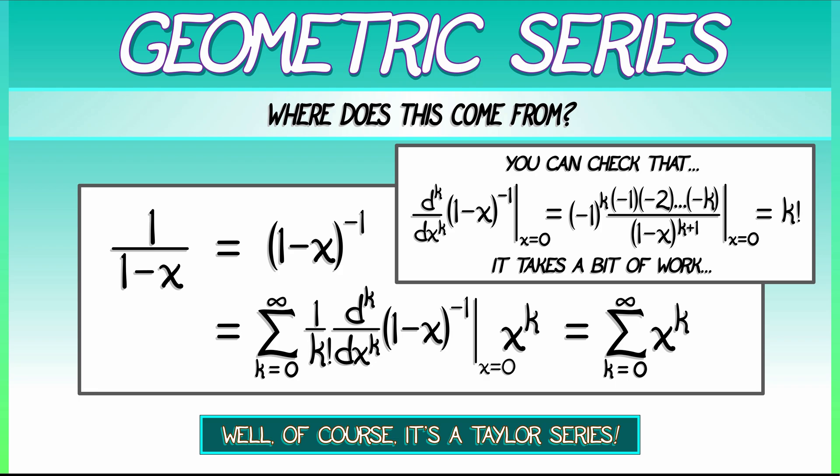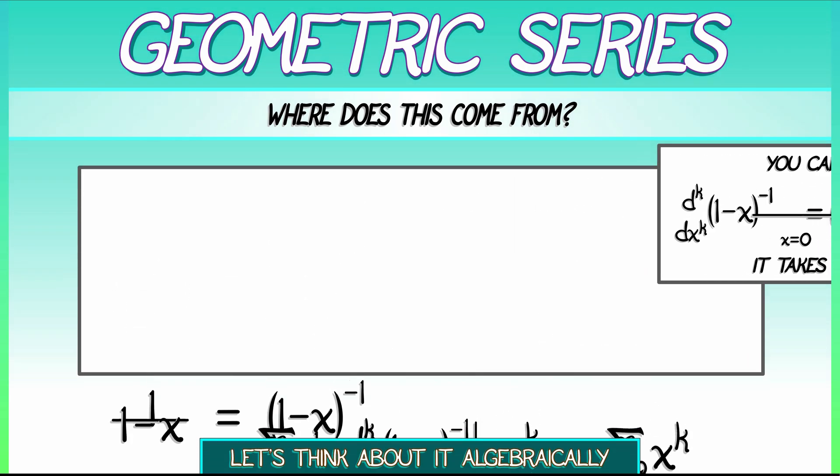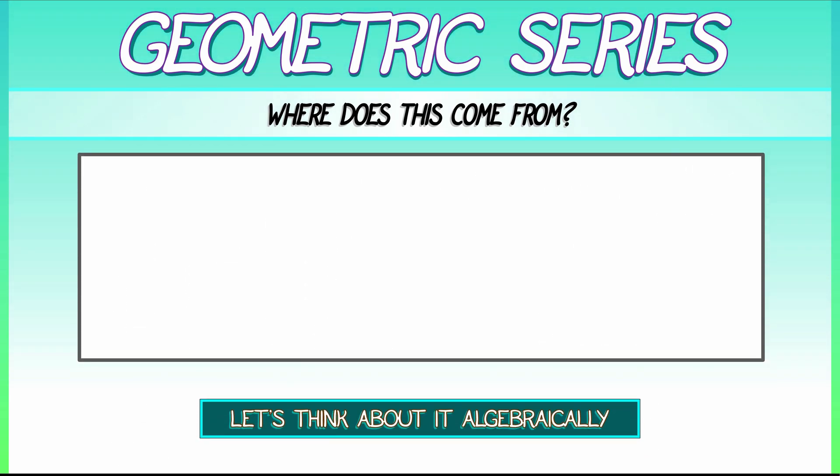Now, we can also think about this algebraically. Take that geometric series. Take that 1 plus x plus x squared. Keep going. Multiply the entire thing by quantity 1 minus x. If we pretend that this is like multiplying polynomials, then what happens?